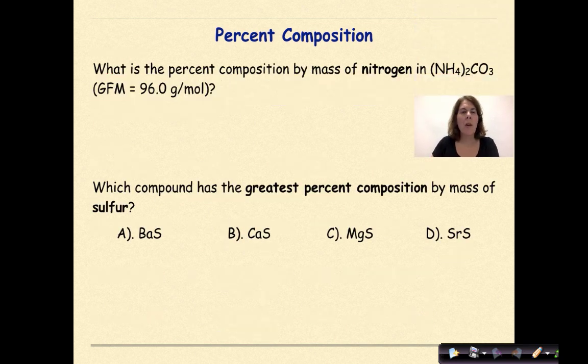Let's do another example. What is the percent composition by mass of nitrogen in ammonium carbonate, where they give us the gram formula mass of 96 grams per mole. So this is our whole right here.